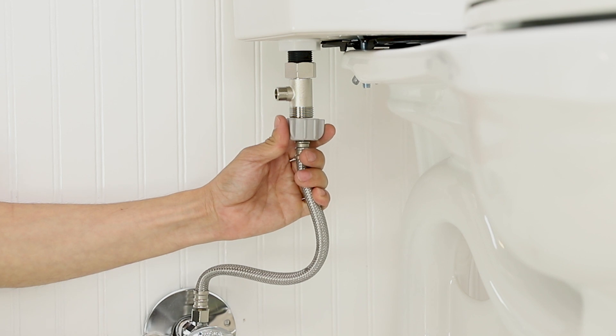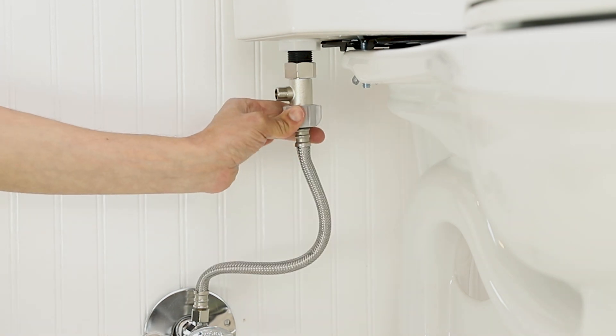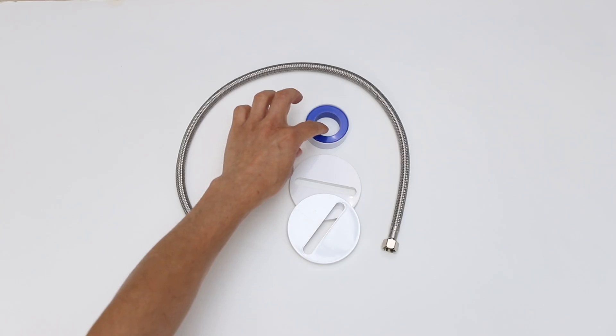Reconnect the flexible supply line to the bottom of the T-valve. It is recommended to apply plumbers tape.